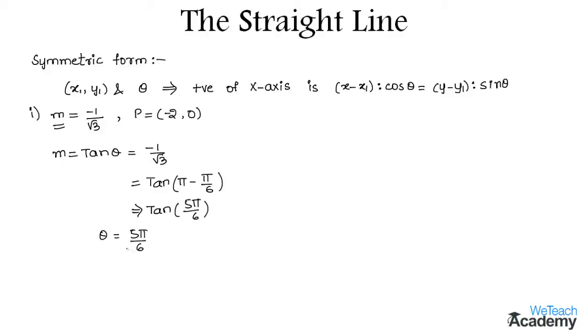By using the value of theta as well as the point P, by equating them to x1 and y1, we get x1 equals minus 2 and y1 equals 0.